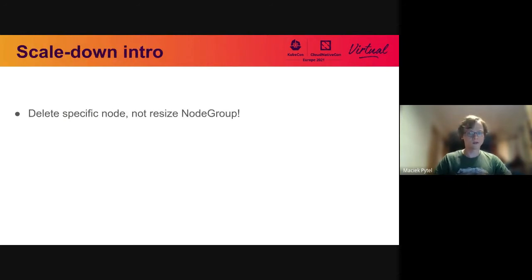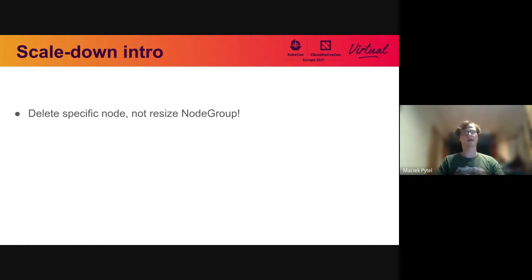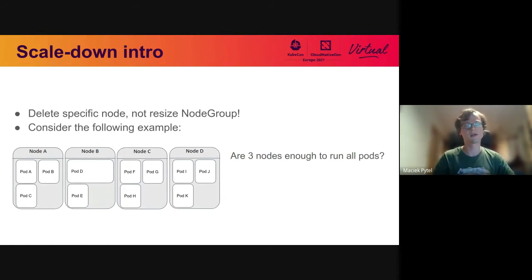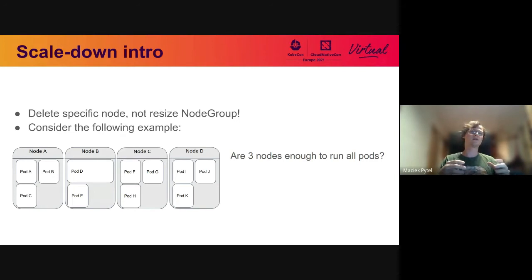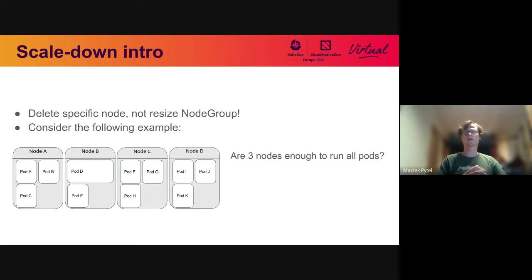With that in mind, let's move on to scale-down. The most important thing is that Cluster Autoscaler looks to remove specific nodes — it always operates on the level of a node and does not try to calculate a desired size of a node group. For example, let's say we have four nodes on this slide with different pods running on them, where the different dimensions of the pods and nodes represent different resource requests — horizontal axis is CPU, vertical axis is memory.